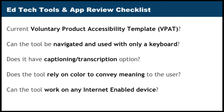This checklist will eventually be programmatically connected to the EmTech records. When somebody adds a new resource, they'll be asked to complete the checklist. When reviewing resources on the wiki, users will be able to view previous reviews and determine if an app is accessible or not. The EmTech team will also take steps to highlight tools that are not accessible or that violate the security and privacy standards we've identified.